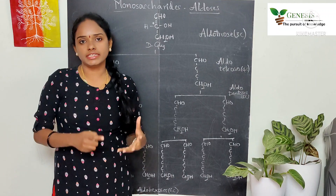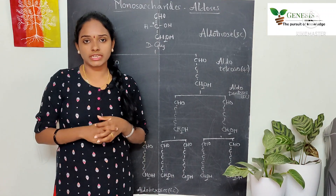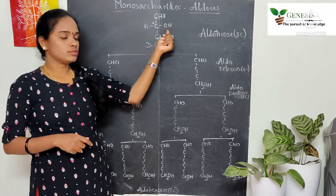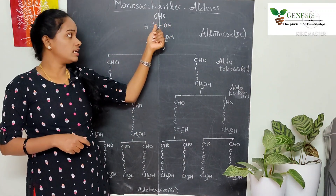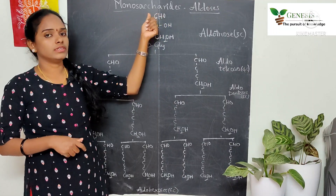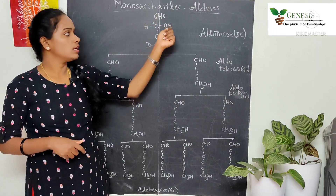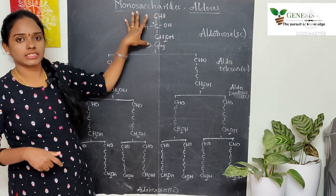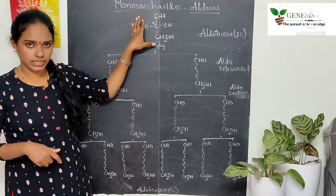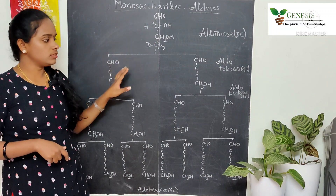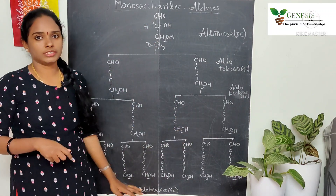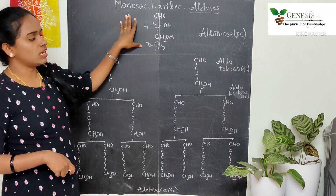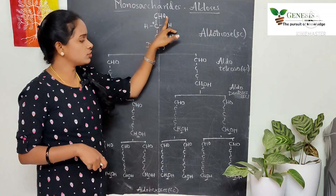While writing down the D-forms of monosaccharides, we take D-glyceraldehyde as the reference carbohydrate. For D-forms, the chiral carbon which is farthest from the functional group contains OH on the right side and H on the left side. Taking this as the reference, we are going to write down the remaining aldoses.